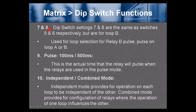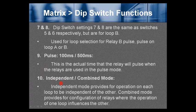DIP switches 7 and 8 are the same as switches 5 and 6 respectively but for Loop B. DIP switch 9: pulse duration — 100 milliseconds or 500 milliseconds, the actual time the relay will pulse when used in pulse mode. DIP switch 10: independent or combined mode. Independent mode provides for each loop to operate independently; combined mode configures relays so that the operation of one loop influences the other.